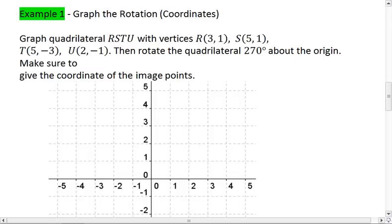In example 1, we're going to graph quadrilateral RSTU with vertices R at 3, 1, S at 5, 1, T at 5, negative 3, and U at 2, negative 1. We're then going to rotate the quadrilateral 270 degrees about the origin. We want to make sure to give the coordinate of the image points.